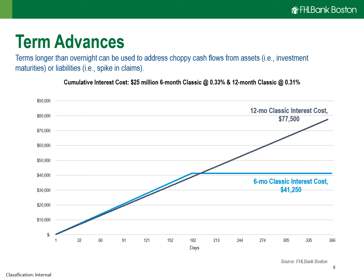Similar to the previous example of borrowing $25 million with the Daily Cash Manager, here we're looking at two examples of moving a little further out the curve — using a six-month Classic Advance or a 12-month Classic Advance — and what the cumulative interest cost would be over a one-year horizon. We'll get into the inverted yield curve where the 12-month rate is below that of the six-month. Depending on the cash flow need and the ability to leverage the balance sheet, these longer-term maturities still produce a very positive spread from income earned on higher-yielding assets versus the low cost of borrowing.